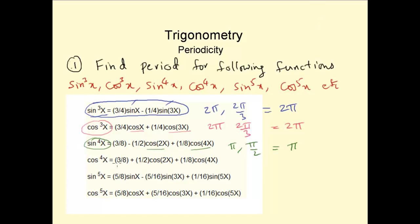Cos⁴x can be explained the same way as sin⁴x: 3/8 plus (1/2)cos2x plus (1/8)cos4x. So the period of cos⁴x would be the LCM of the period of cos2x and cos4x. The period of cos2x is π and the period of cos4x is π/2. So the LCM of π and π/2 is π. The period of cos⁴x is again π.